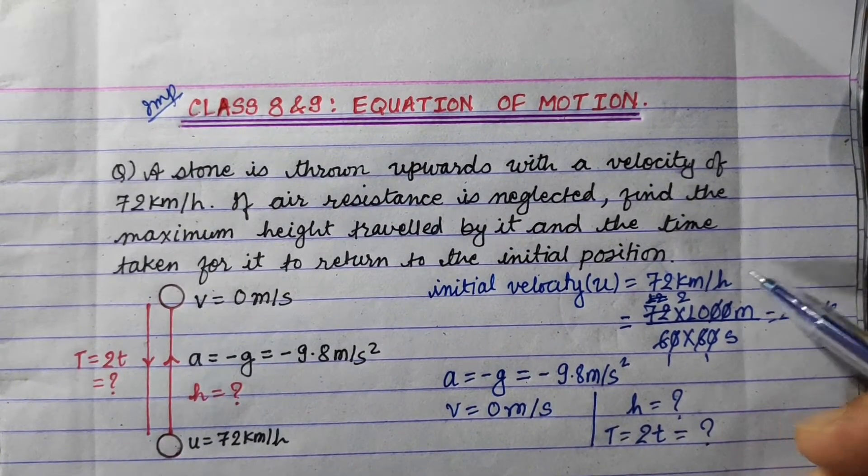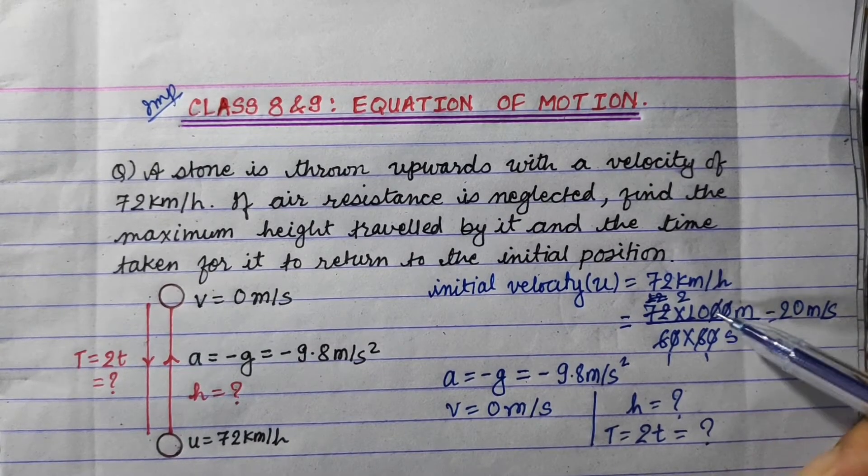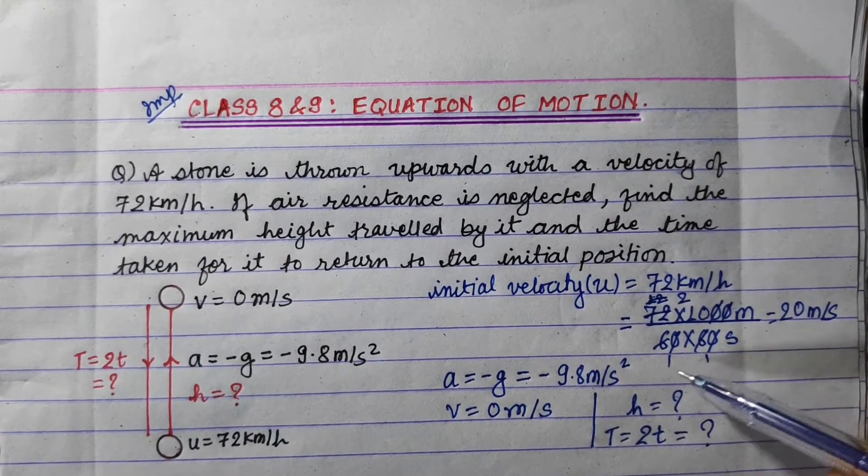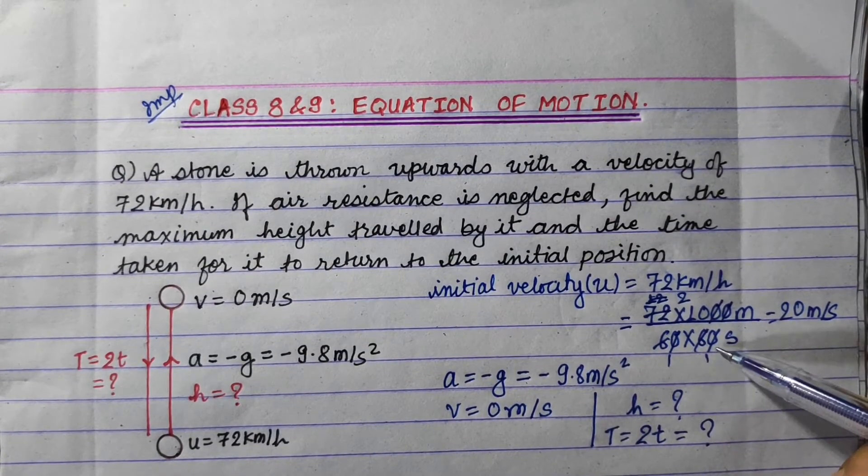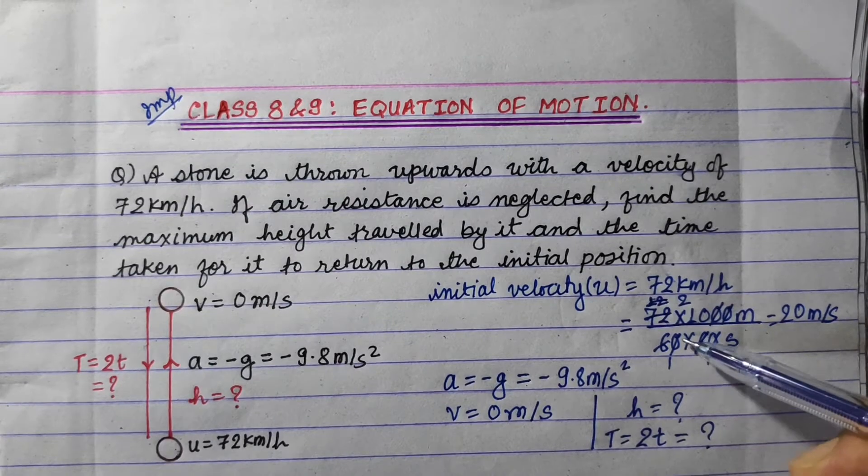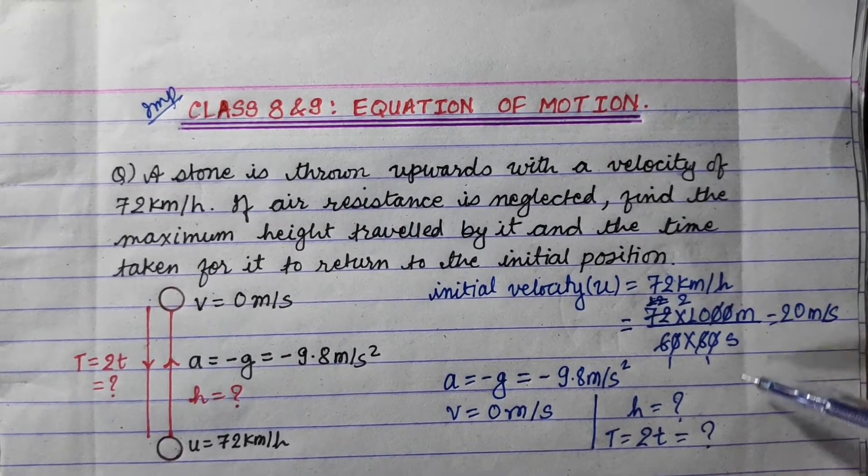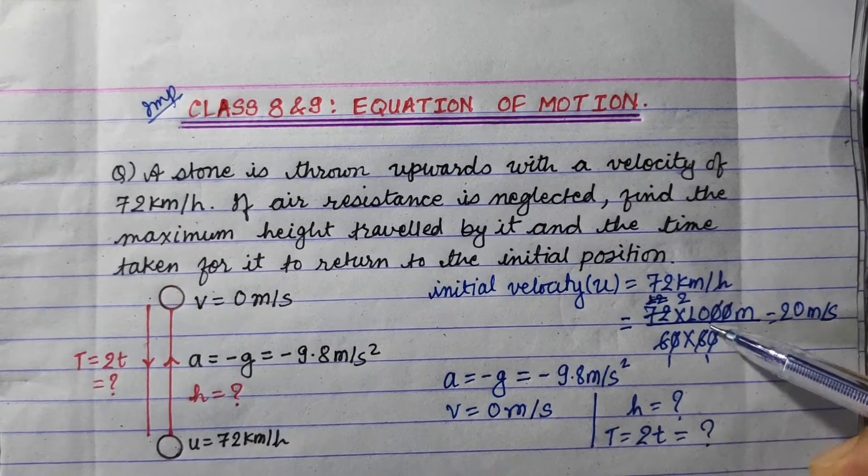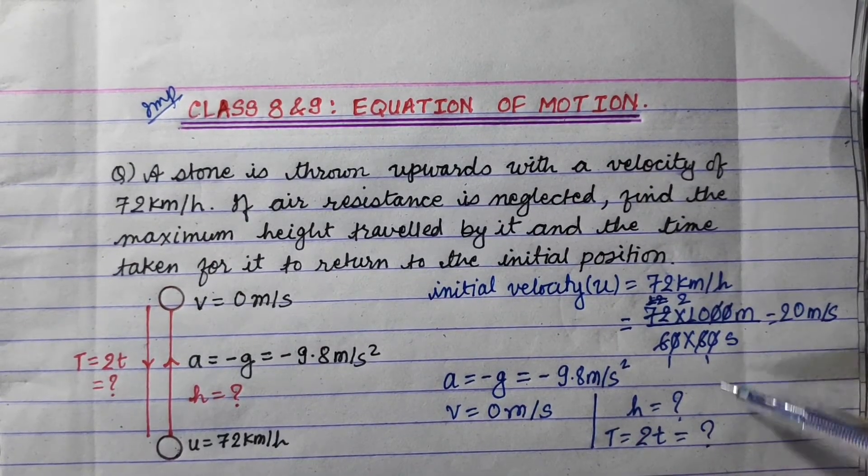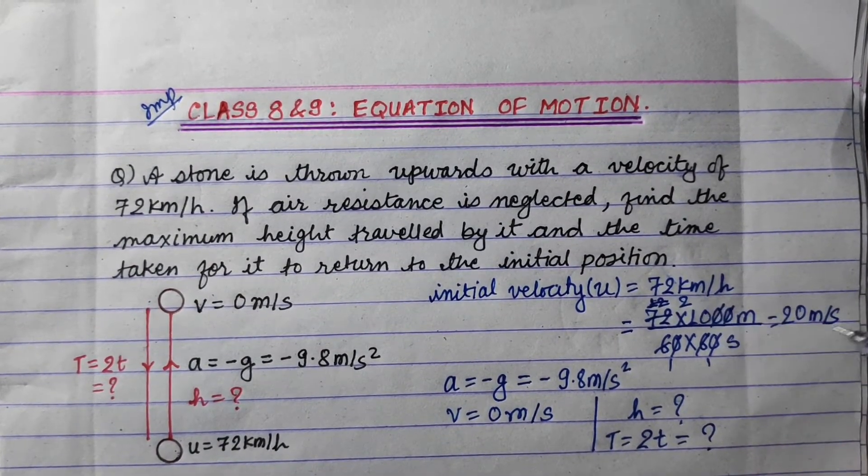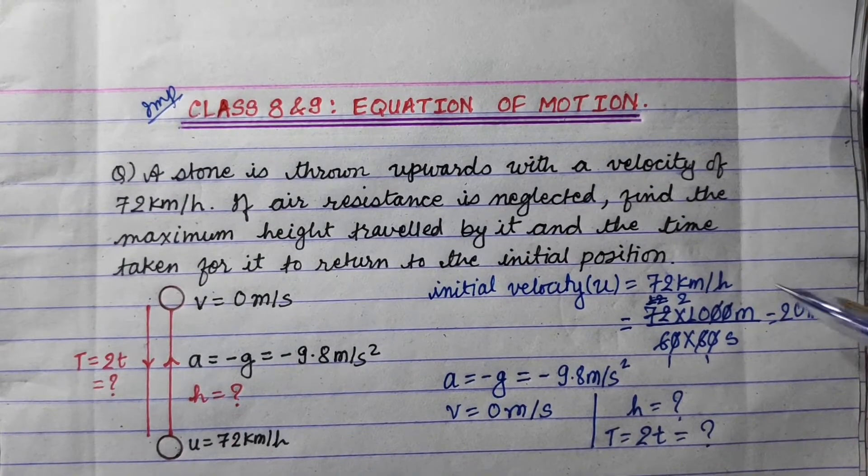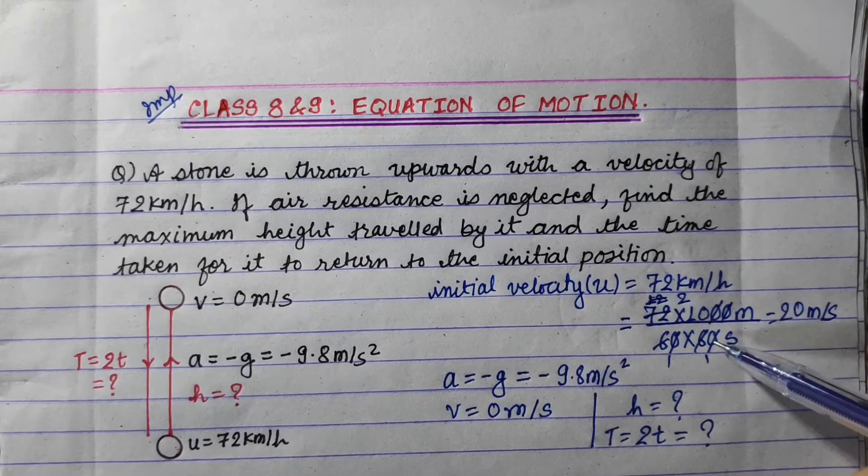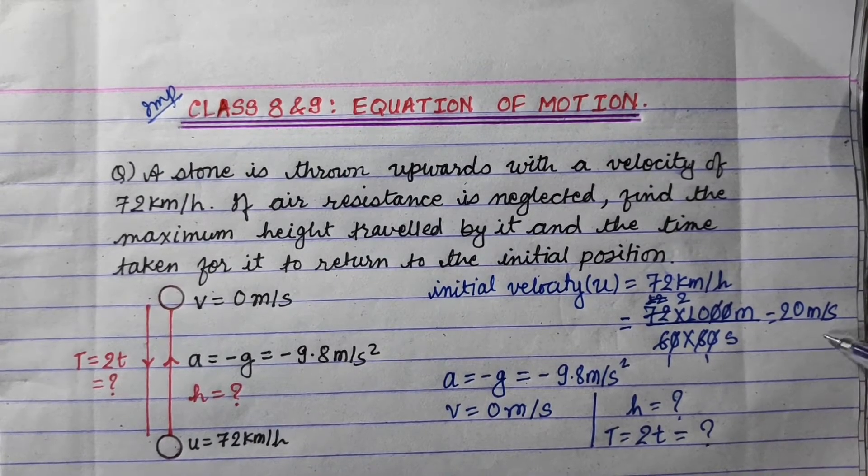The initial velocity is 72 kilometer per hour. To convert to meter per second, we divide by 1000 to get kilometer to meter, and the hour to second is 60 into 60. Simplifying, we get 2 into 10 is 20 meter per second. So initial velocity is 20 meter per second.